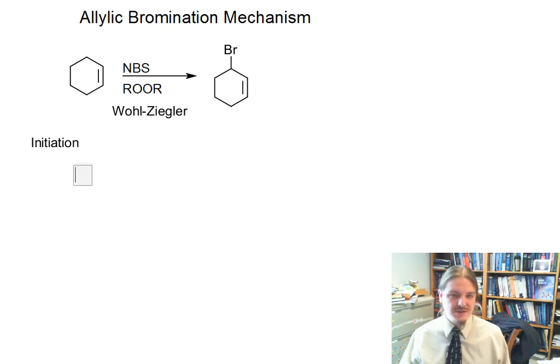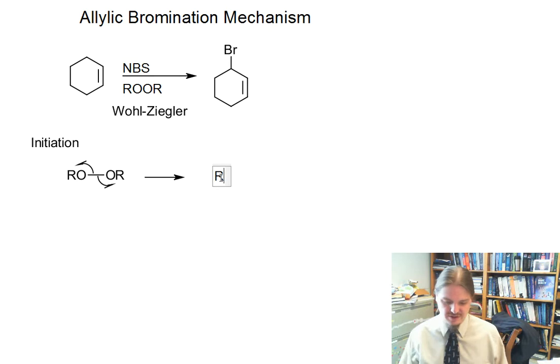Since we have a radical initiator, we have a peroxide initiator. A peroxide initiator is going to do what we expect it to, undergo homolytic cleavage and we're going to generate two alkoxy radicals, which is the behavior we expect out of our radical initiator.